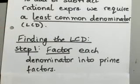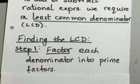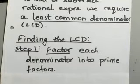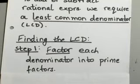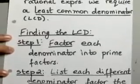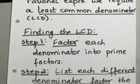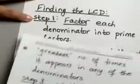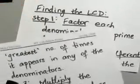The first thing you will do is factor each denominator into prime factors. When we say prime factors, basically you want to break it down as far as you can, just like breaking down numbers into their prime factors. After you do that, you will go ahead and list each different denominator factor the greatest number of times it appears in any denominator.